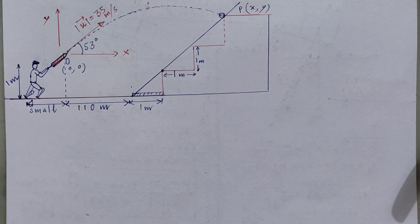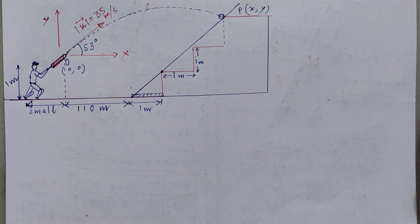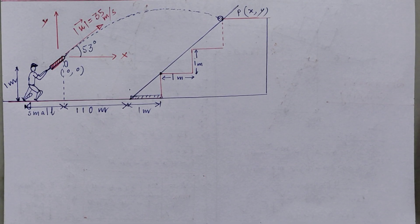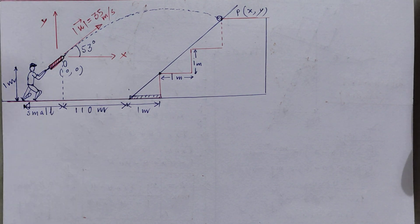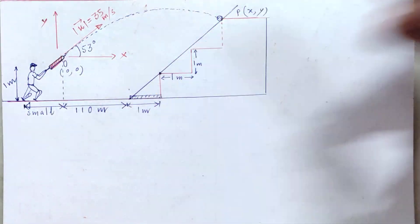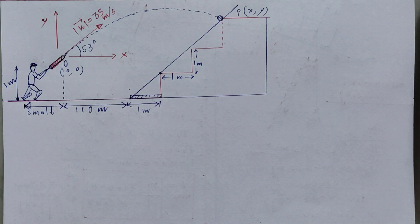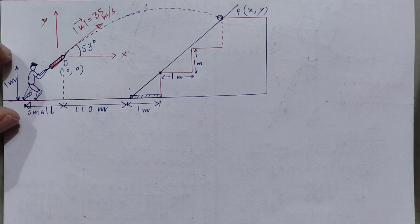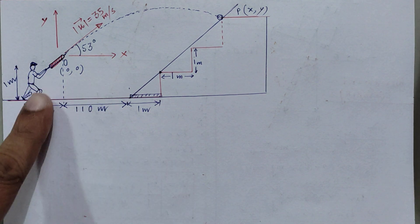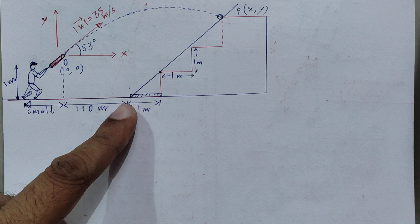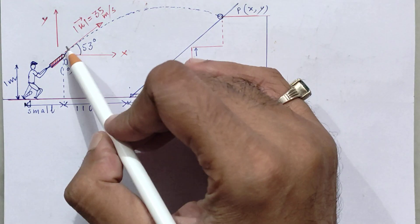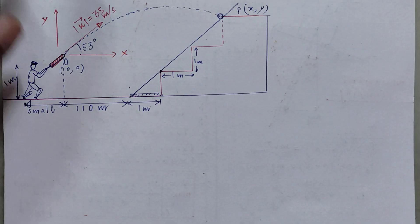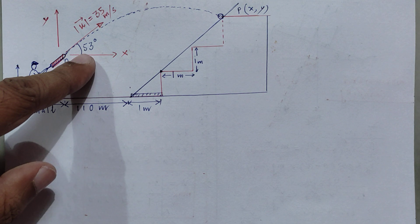Hello everyone, welcome to Physics is Fun. Today we will discuss a very interesting problem on projectile motion and kinematics. It's a cricketer problem — suppose Virat Kohli is standing on the field and has hit a mammoth six. The height of the player is given as 1 meter. The player is at a distance of 110 meters from the first step of the gallery. The ball has been hit with a velocity of 35 meters per second at an angle of 53 degrees with the horizontal.